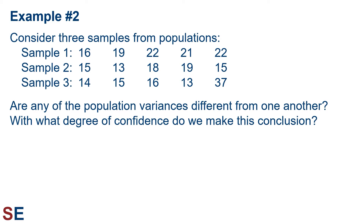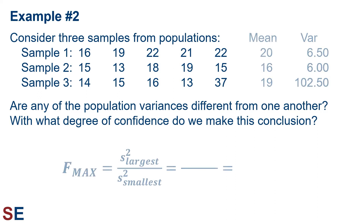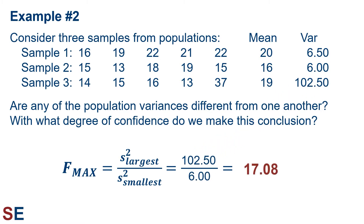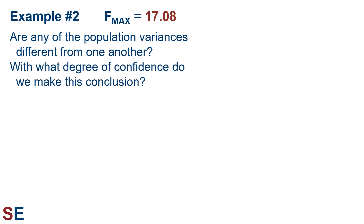For our second example, let's think about three samples, each of which have five values from their populations. The questions are the same: are any of the population variances different from one another, and with what degree of confidence? The first step is to calculate the sample means and variances. Looking at the variances, 102.50 is the largest and 6.00 is the smallest. The calculated Fmax value is therefore 102.5 divided by 6, which equals 17.08. We have three groups and each group has five values, giving us 5 minus 1 equals 4 degrees of freedom for each group.